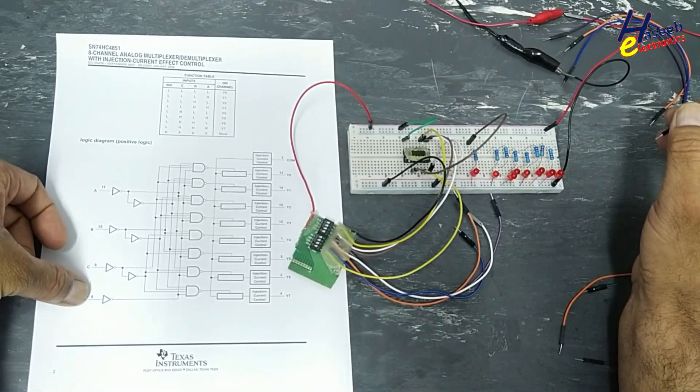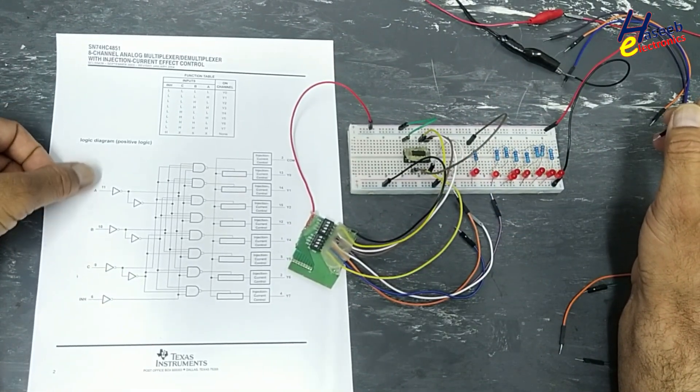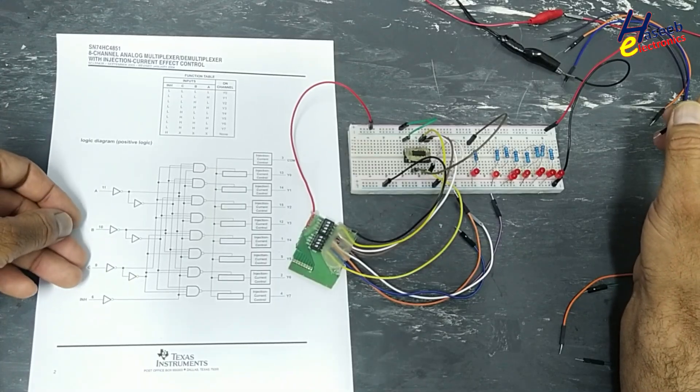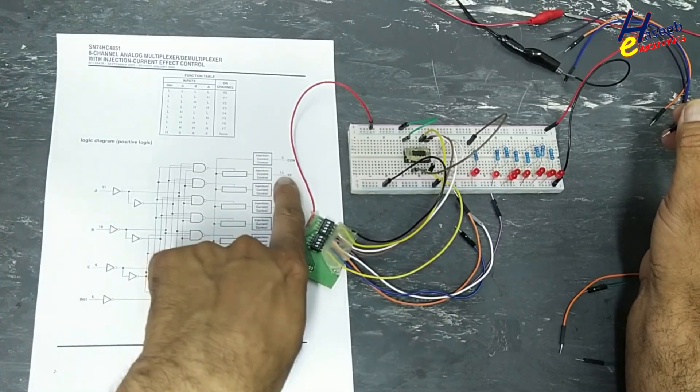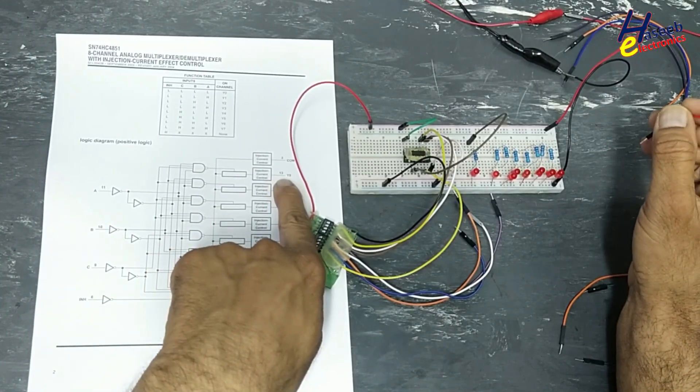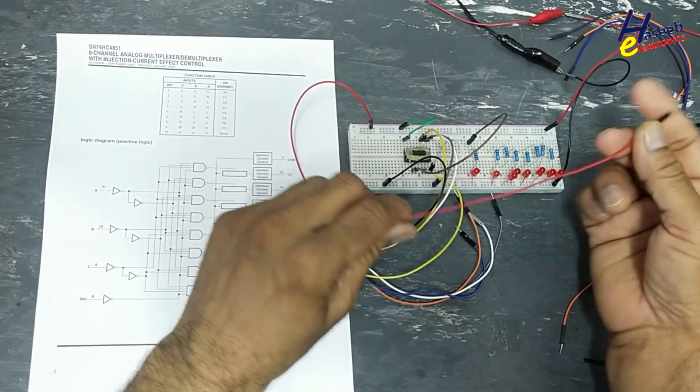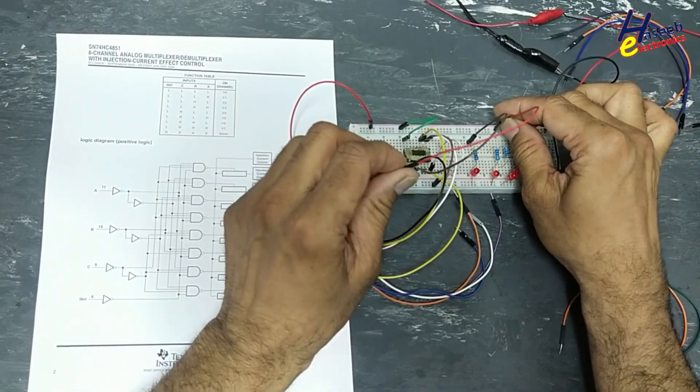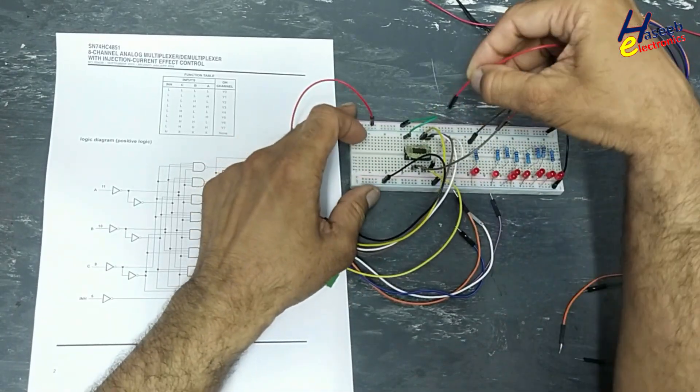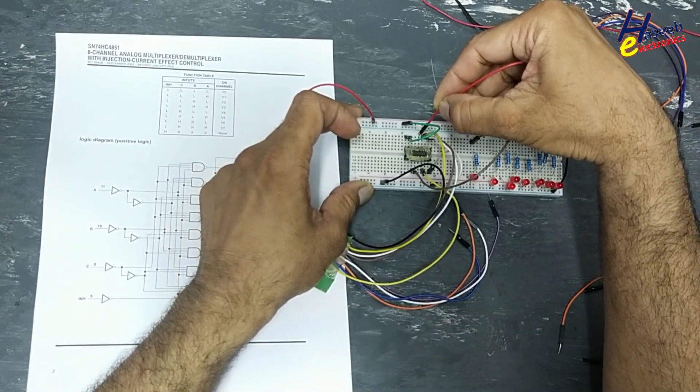Now we selected inhibit zero, C zero, B zero, A zero. That means zero address, that is this location. We will take output from pin number three, and only the signal present at pin number 13 will be provided.